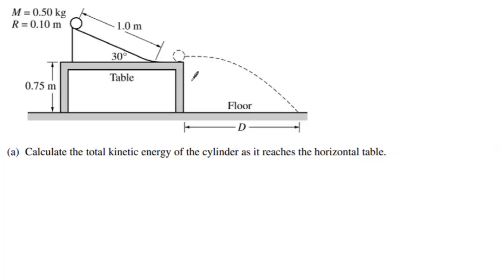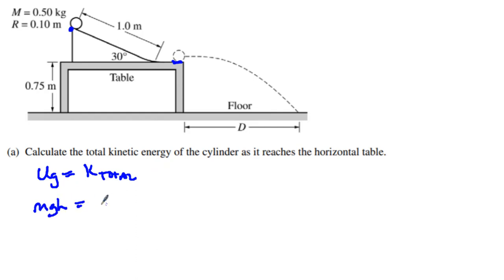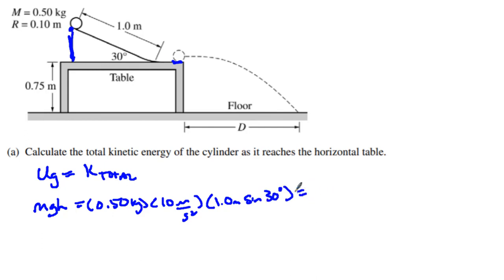The first part asks for the total kinetic energy as the ball reaches the table. This is gravitational potential energy converting to total kinetic energy. Gravitational PE equals mass times gravity times height. The mass is 0.50 kg, gravity is 10 m/s², and the height is 1.0 meters times sine of 30 degrees because it is opposite that 30-degree angle. That gives 2.5 joules — so the total kinetic energy at the table is 2.5 joules. This was worth two points: one for setup, one for the answer.